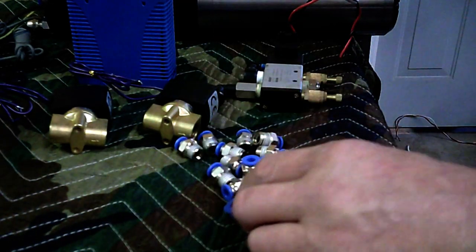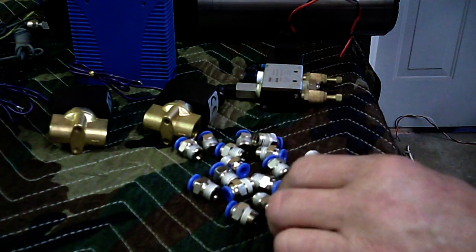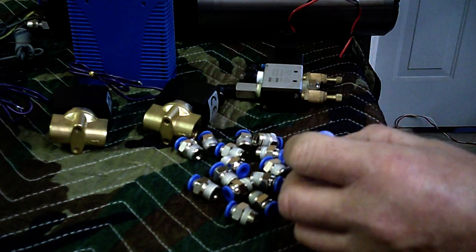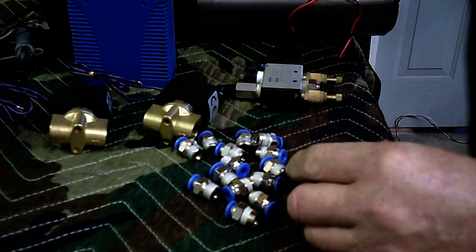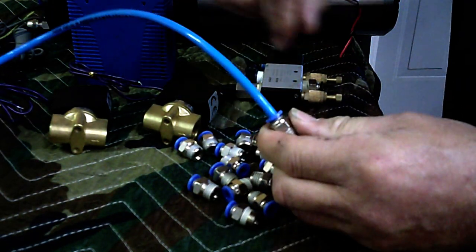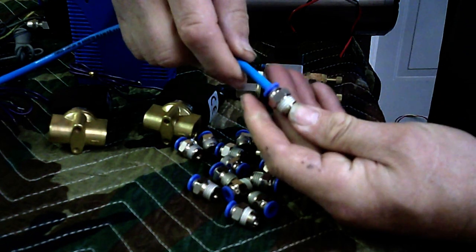And these are some quarter NPT by six millimeter—well that's just a cap—quarter NPT by six millimeter connectors, press fit connectors. I kind of like these because all you have to do is push the tube in, six millimeter tube obviously, and pull back and it's locked in place. If you ever need to remove it, you push in, hold that back, pull it out.